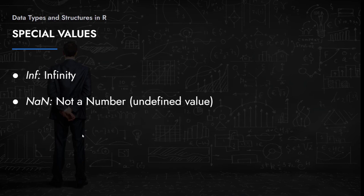There are other special values in R aside from the common types and NA. There is a special value that represents infinity, and a special value that represents 'not a number' or an undefined value — for example when you divide something by zero or perform a mathematical operation that results in an undefined value. We will most probably never encounter these two values, but it is always helpful to know they exist.